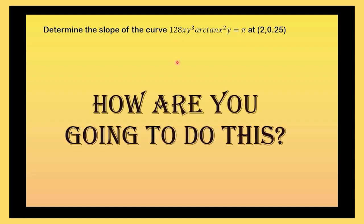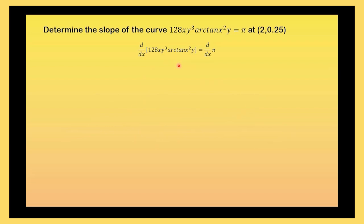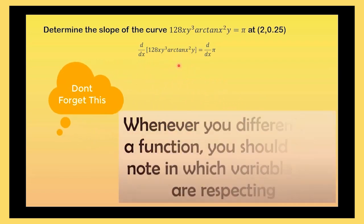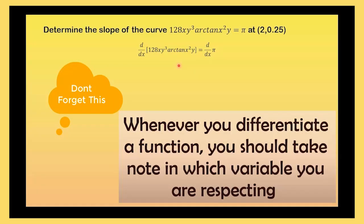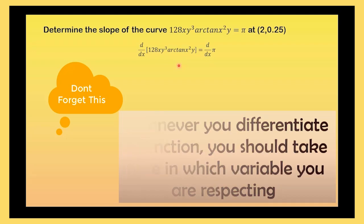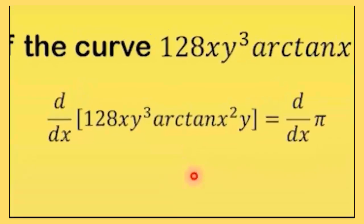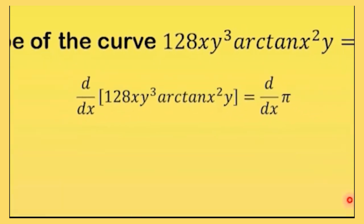If you were going to do this manually, you differentiate it with respect to x. Don't you ever forget this. Whenever you differentiate a function, you should take note in which variable you are respecting. For example, here, you are taking the derivative of this function in terms of x. This implicit differentiation will give you this kind of solution.